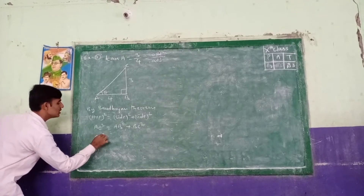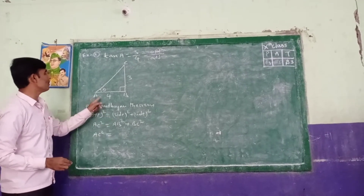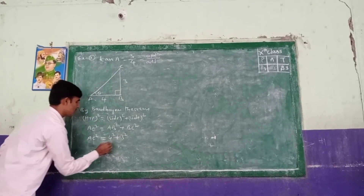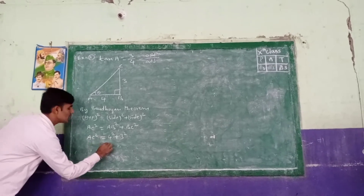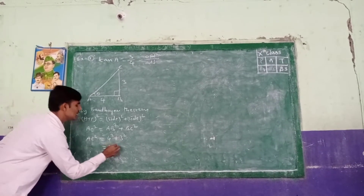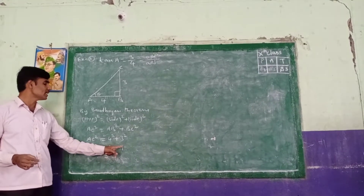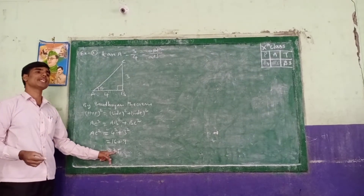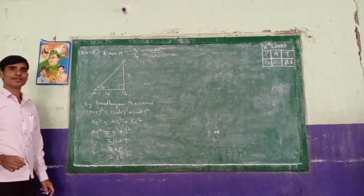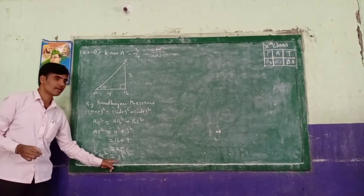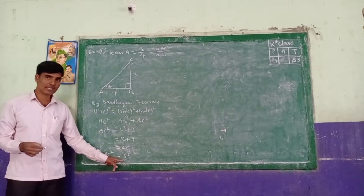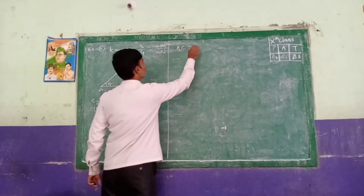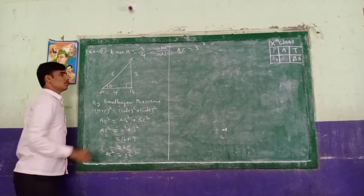AC square equals 4 square plus 3 square. 4 square equals 16, and 3 square equals 9. So 16 plus 9 equals 25. 25 means 5 square. Since AC square equals 5 square, the powers are equal so the bases are also equal, meaning AC equals 5.